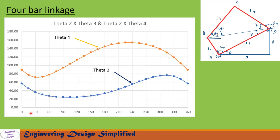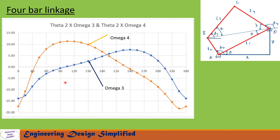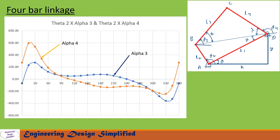In this graph we have plotted theta 2 along the horizontal axis from 0 to 360, and theta 3 and theta 4 along the vertical axis. The blue curve represents the variation of theta 3 with respect to theta 2. In the next graph, omega 3 and omega 4 are plotted versus theta 2, with the blue curve for omega 3 and the yellow curve for omega 4. Finally, alpha 3 and alpha 4 are plotted versus theta 2, with the blue curve for alpha 3 and the yellow curve for alpha 4.